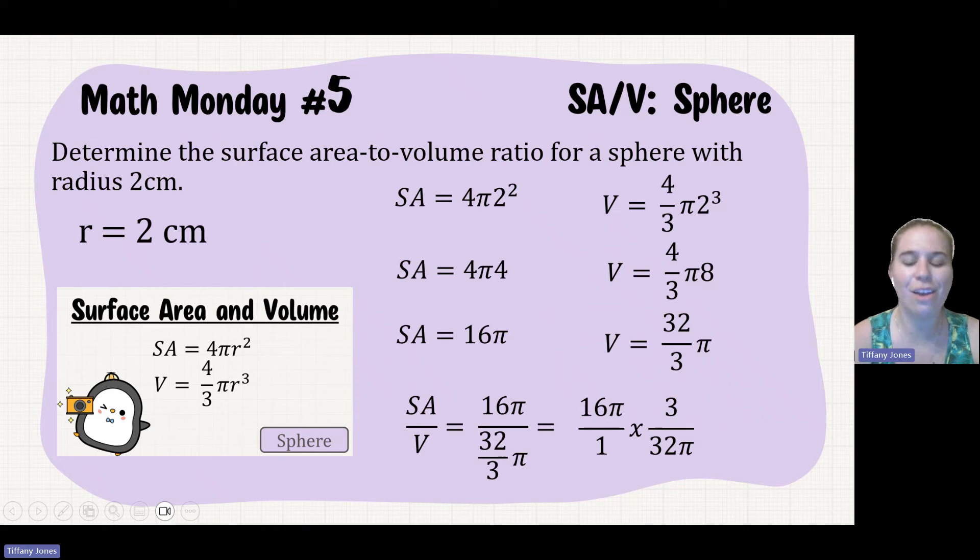So go ahead and reduce this. So there can be two 16s and 32, so that would be 1 and 2. So 3 times 1 is 3, and 1 times 2 is 2. So the answer here is 3/2 is our ratio.